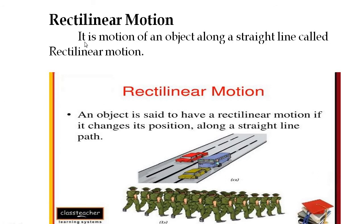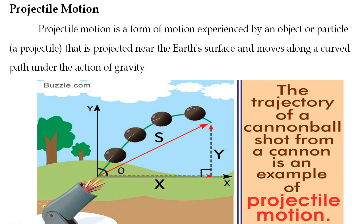Now we discuss fundamental terms. First, rectilinear motion: it is the motion of an object along a straight line. In the examples shown, the object changes its position and moves along a straight-line path — that is nothing but rectilinear motion.